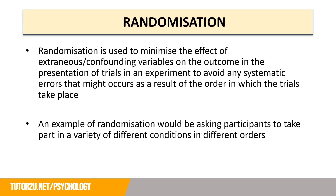So how can we try to control extraneous or confounding variables? One way is randomisation, which is used to minimise the effect of extraneous or confounding variables on the outcome by varying the presentation of trials in an experiment, to avoid systematic errors that might occur as a result of the order in which trials took place. An example would be asking participants to take part in a variety of different conditions in different orders. Importantly, you should never say 'get rid of' extraneous or confounding variables — the better wording is to say 'minimise the effect' of these variables through something such as randomisation.